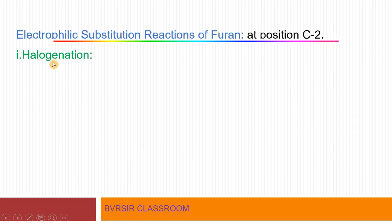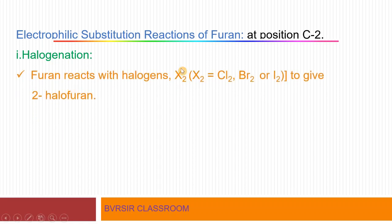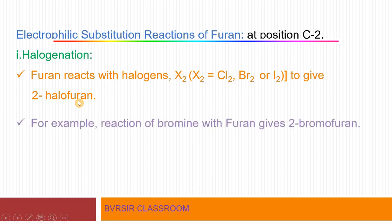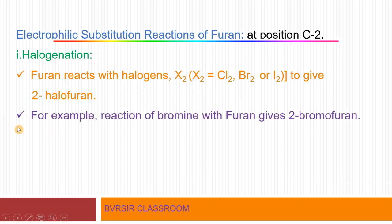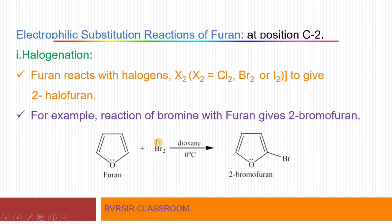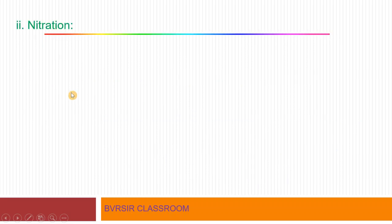So electrophilic substitution in furan is fixed at the C2 position. The first reaction is halogenation — the replacement of hydrogen by a halogen atom. Furan reacts with halogens X2 (such as Cl2, Br2, or I2) to give 2-halofuran at the second position. For example, the reaction of bromine with furan gives 2-bromofuran, where the bromine atom is substituted at the second position.